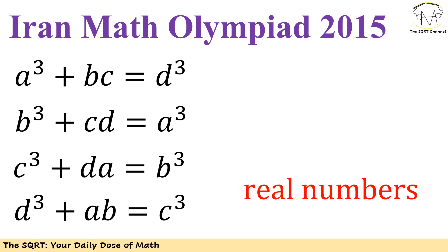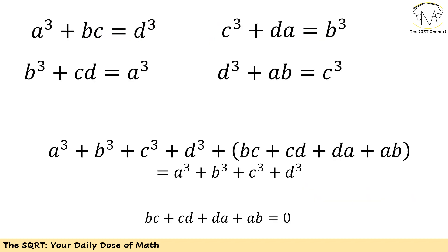And finally I have d³ + ab = c³. We know that a, b, c, and d are real numbers and we need to find all possible answers for a, b, c, and d. Let's see how we are going to solve this.